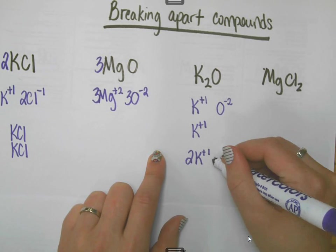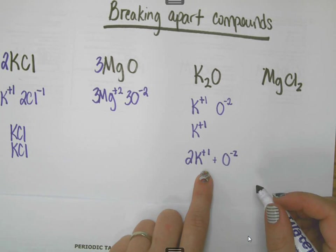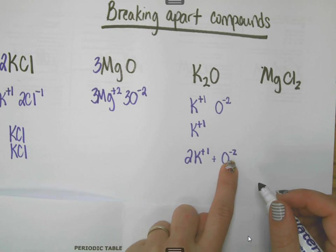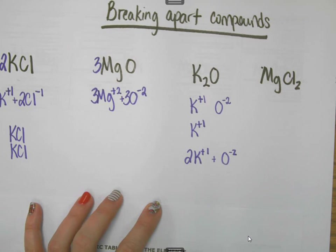The way that you would write it in net ionic equations is you would break it up like this. You would put the multiplier in front of it. You would give it a coefficient. You would write 2K plus 1 plus O negative 2, and I can put the plus signs between these other ones if that helps for clarification purposes.